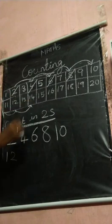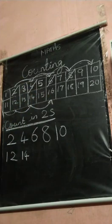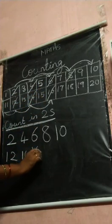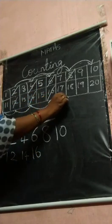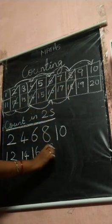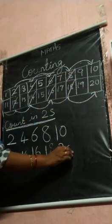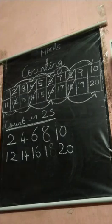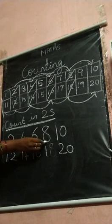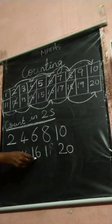After two jumps: twelve. After two jumps, what will come next? Fourteen. After two jumps, say children, what will come? Sixteen. You take it and write it. After two jumps, what will come? Children say: good. Eighteen.